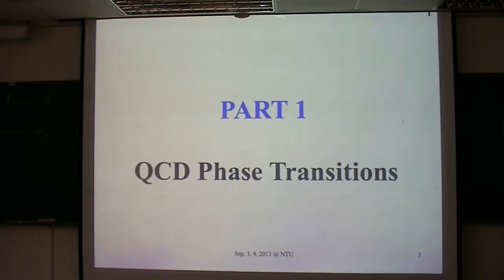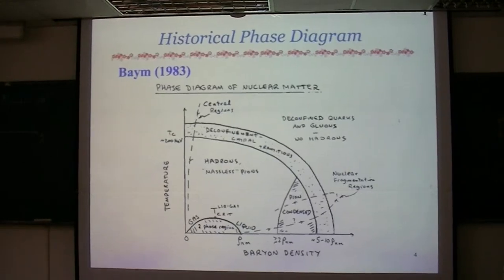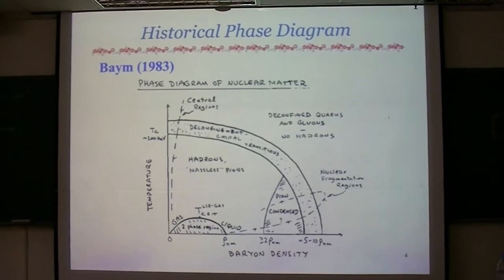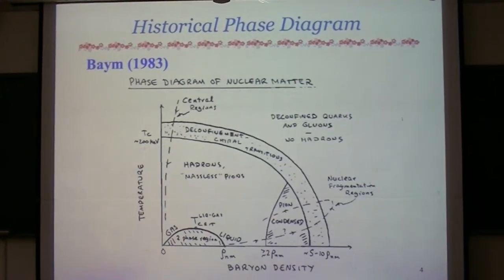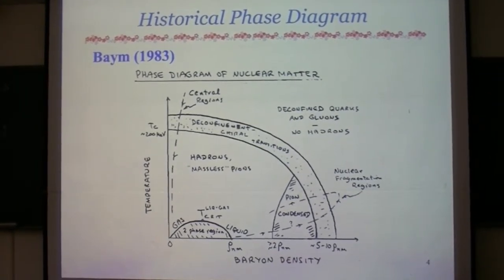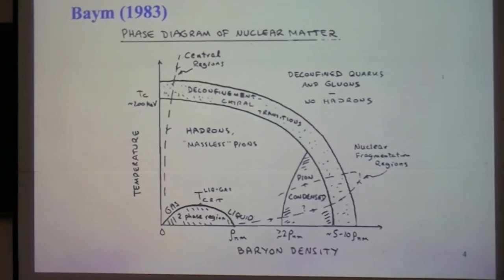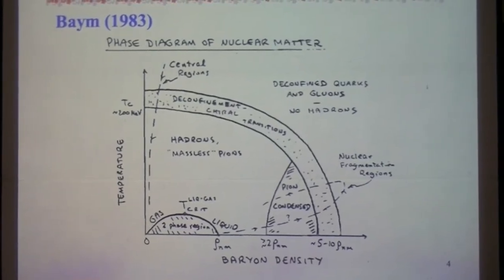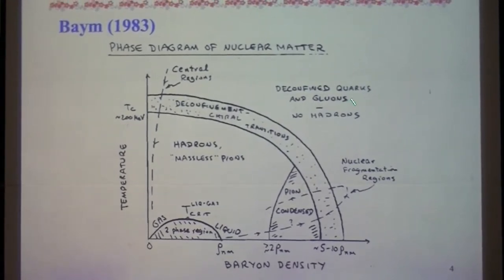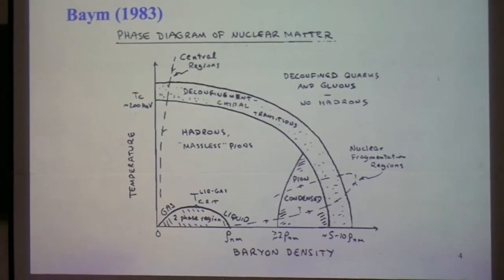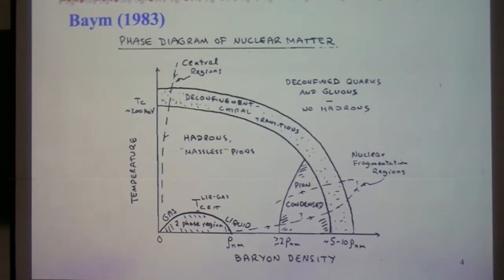The first part: QCD phase transitions. Whenever I talk about the QCD phase diagram, I'm very happy to show this information. This is actually a very important phase diagram, and it basically led us to the realization of the heavy ion collision facilities like RHIC or LHC. Here you see the horizontal axis is the baryon density — or in the modern language, the baryon chemical potential — and this vertical axis represents the temperature.